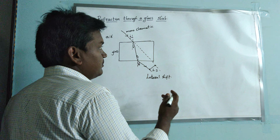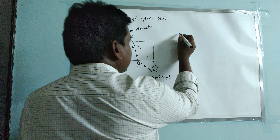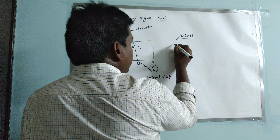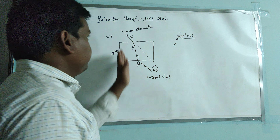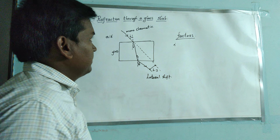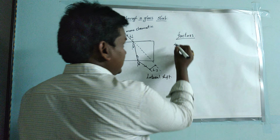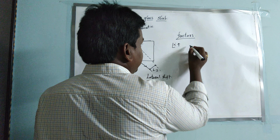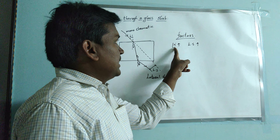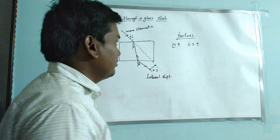Why does lateral shift take place? It is due to the glass slab. There are some factors affecting lateral shift. If a light ray passes along the normal, it won't deviate — it travels straight. But when we make some angle with the normal, the shift takes place. So if the angle of incidence increases, the lateral shift also increases. If the angle of incidence decreases, the lateral shift also decreases. Both are directly proportional to each other.